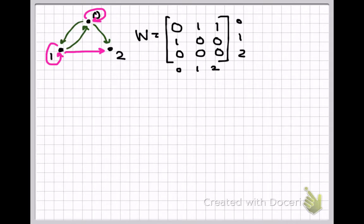Warshall's algorithm adds 1s into this matrix corresponding to the new edges that need to be added. In this case, we know we are going to eventually have to flip the entries in the (0,0) position, the (1,1) position, and the (1,2) position, because that's where the new edges are going to go.